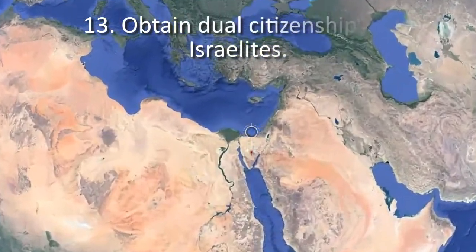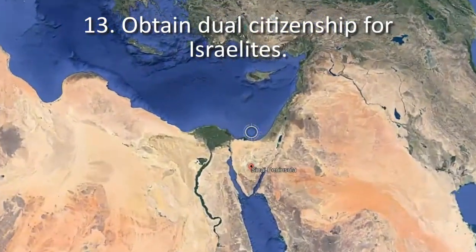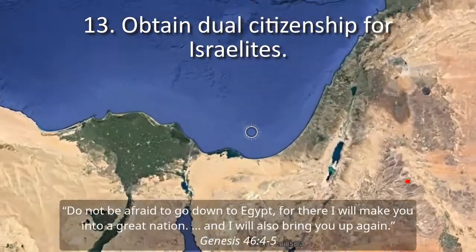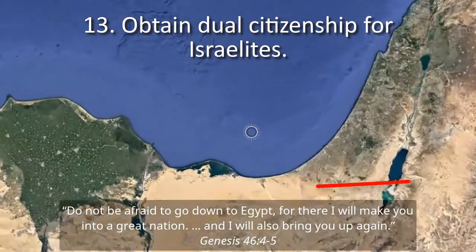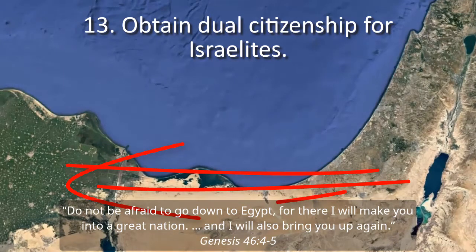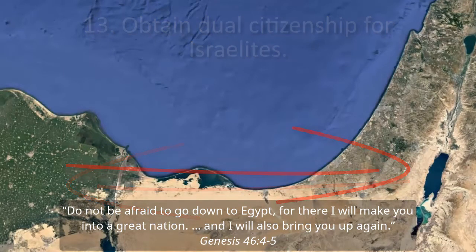Protocol 13: Obtain dual citizenship for Israelites. "Do not be afraid to go down to Egypt, for there I will make you into a great nation, and I will also bring you up again."